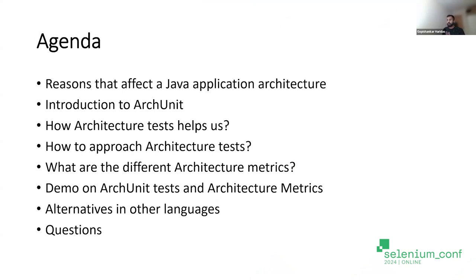Let's go through the agenda. We will first briefly discuss the reasons why a Java coding architecture and application architecture can change. Then I'll introduce a tool called ArchUnit. After that, I'll explain how it helps, what the approaches are, how to write architecture tests in your codebase, what the different architecture metrics are, and then there'll be a quick demo on ArchUnit tests and architecture metrics.